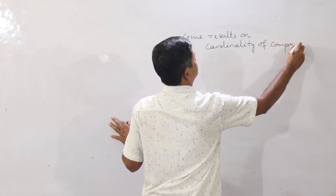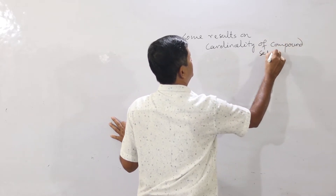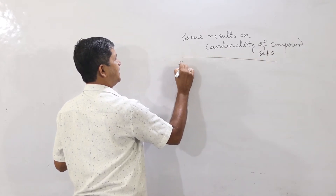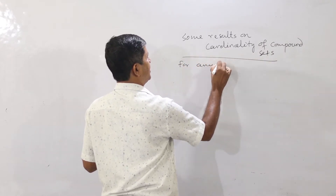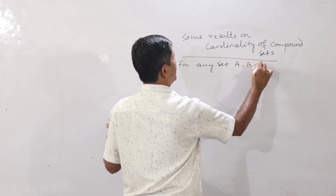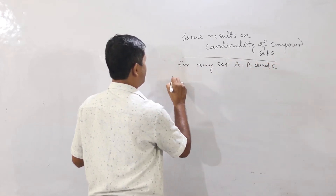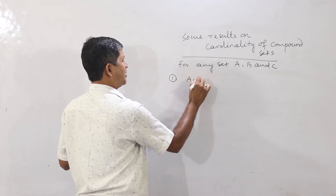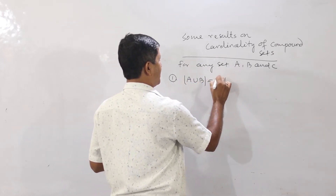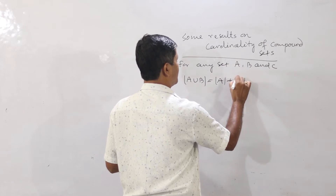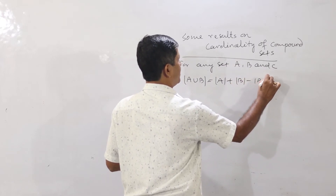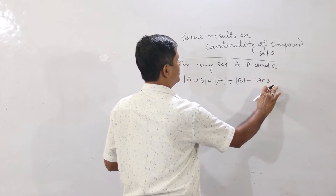For any sets A, B, and C, the first result: the cardinality of A union B equals cardinality of A plus cardinality of B minus cardinality of A intersection B.